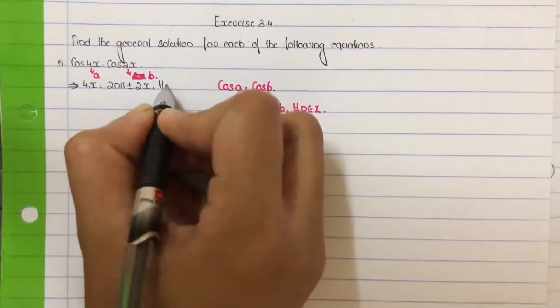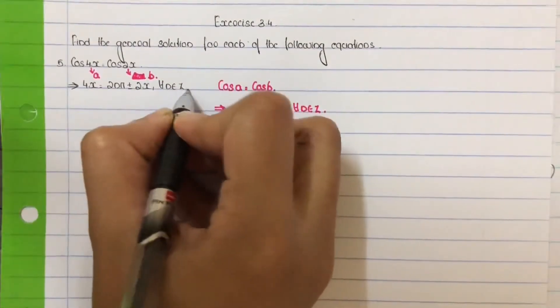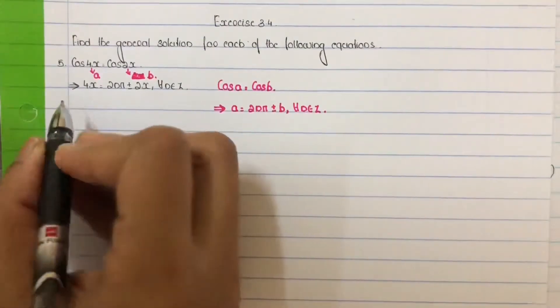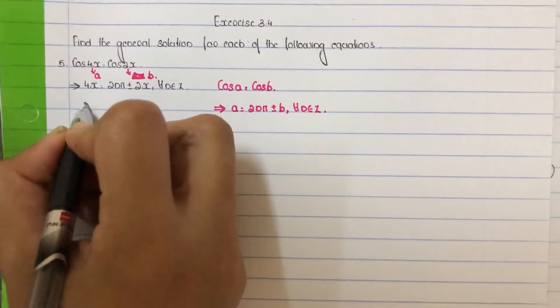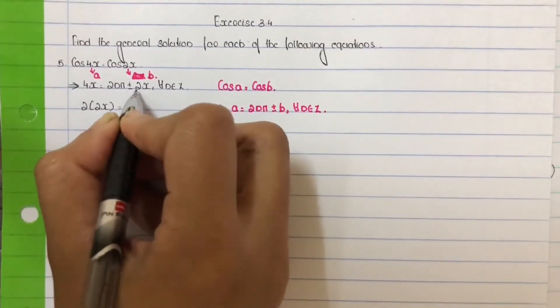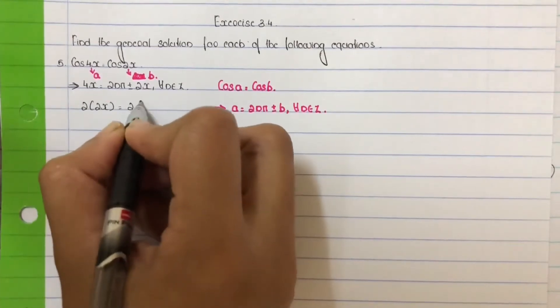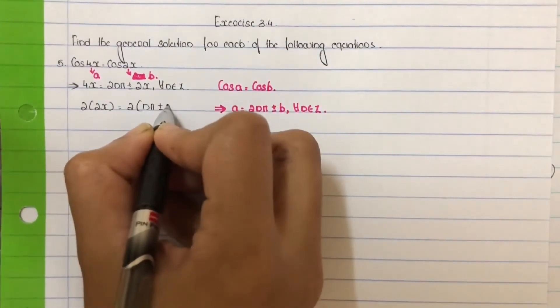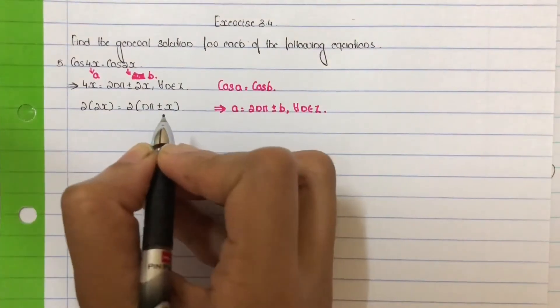Next simplify. Take 2 common outside. Write 4 as 2 into 2. So 2 into 2x equal to 2 into nπ plus or minus x.